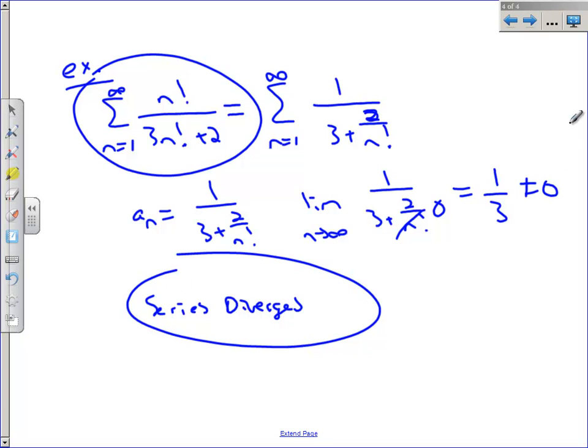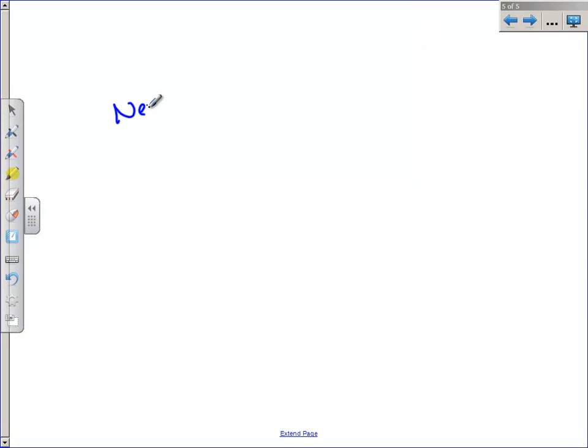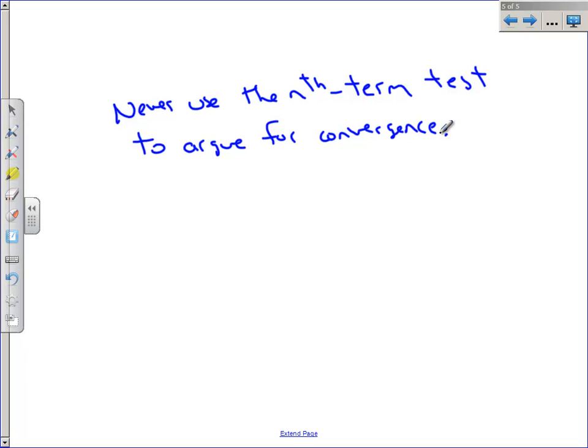Now, I want you to be careful. This is a test for divergence. You can never, ever, never use the nth term test to argue for convergence. We have other things that we'll learn to argue for convergence. I'm sort of leaving you guys alone tomorrow to play around with some series. And I want you to, I encourage you to use your calculator with some of these to plug in some numbers and see what happens. And so do the best that you can. And there'll be another video this weekend. And I will see you guys on Monday.